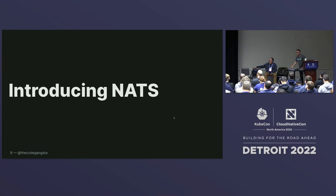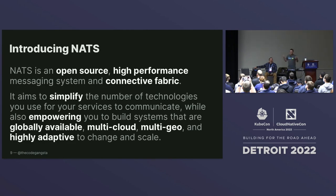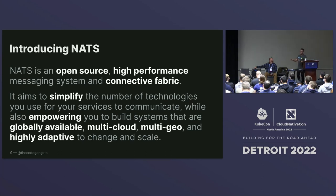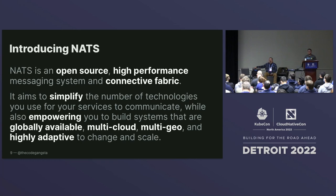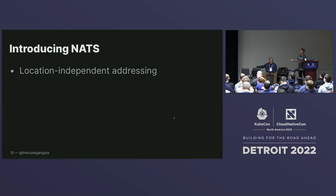So this is where I want to introduce NATS. What is NATS? This can't be a KubeCon without a buzzword soup paragraph. NATS is an open source, high-performance messaging system and connected fabric. What the project aims to do is simplify the number of technologies you use for your services to communicate, all while empowering you to build systems that are globally available, multi-cloud, multi-geo, and highly adapted to change in scale. What we've actually done with NATS is really hone in on what it looks like to communicate. We're not trying to handle orchestration or compute — we want to handle the communication bit, which gets kind of thrown under the rug.